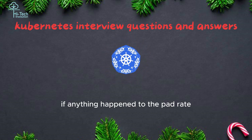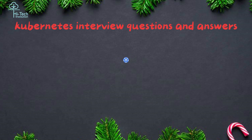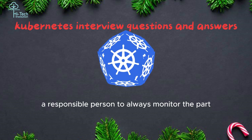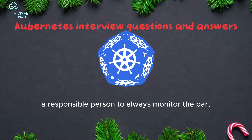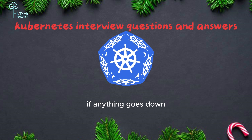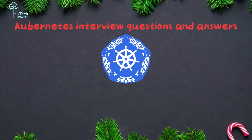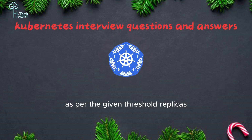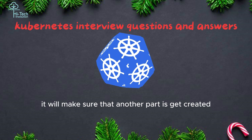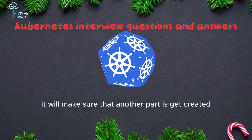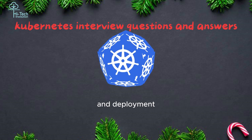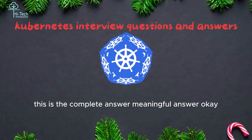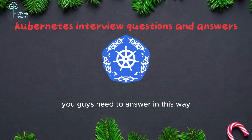If anything happened to the pod, ReplicaSet is the responsible entity that always monitors the pod. If anything goes down below the given threshold, ReplicaSet will make sure another pod is created in the deployment. This is the complete, meaningful answer. You need to answer in this way.